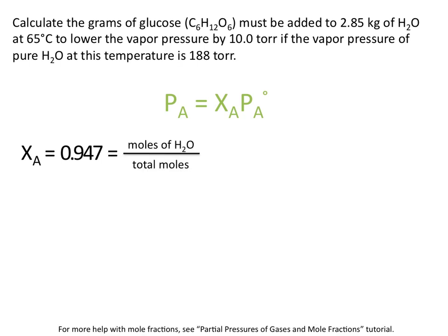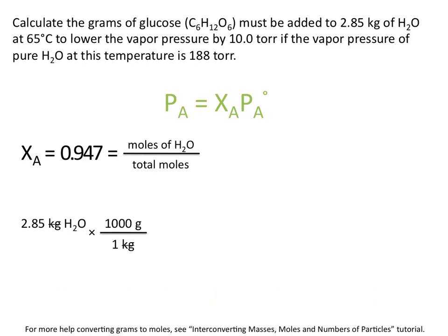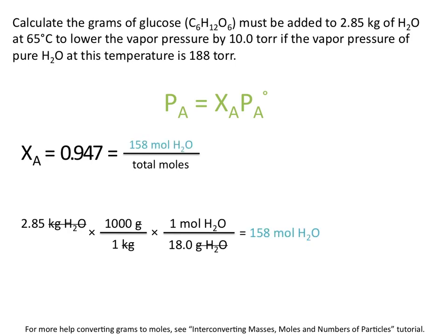The mole fraction is equal to the moles of H₂O divided by the total number of moles. We know we have 2.85 kilograms of H₂O, so we can calculate the moles of H₂O. We first convert kilograms to grams — there are 1,000 grams in every 1 kilogram — and then use the molar mass of H₂O, which is 18 grams per mole, to get 158 moles of H₂O. Plugging this into our equation and solving for total moles gives us 167 moles.